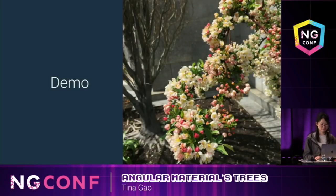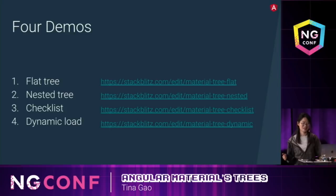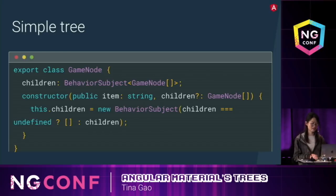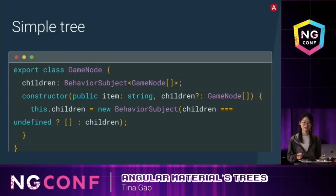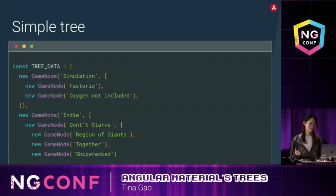Now let's see some demos. I have four demos: one for flat tree, one for nested tree, one for a tree with checkboxes, and one tree that can dynamically load its children. Here's the data structure for a node in the tree. You can define your own nodes — this is just an example. Each node is a game; it can be a category of game or it can be a game, and optionally it has a list of children. And here's our data — we have some games and some games are nested under a category.